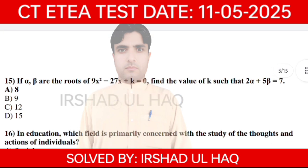Question 15. If alpha and beta are the roots of 9X squared minus 5X + 6 plus K equals 0, find the value of K such that 2 alpha plus 5 beta equals 7. Option number A.